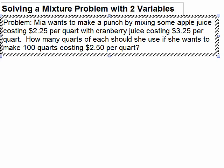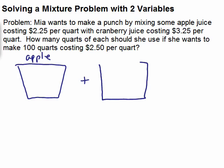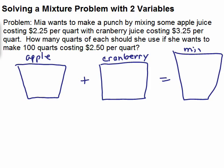I'm going to draw a picture to show what's going on here. We have to mix some apple juice with some cranberry juice. Let's say we've got a container of apple juice, and I'm going to add it to some cranberry juice. If I add them together, I'm going to have a mix of juice. Underneath each vat, I'm going to put how much it costs. I'm going to do it in terms of cents so I don't have to worry about decimal points.